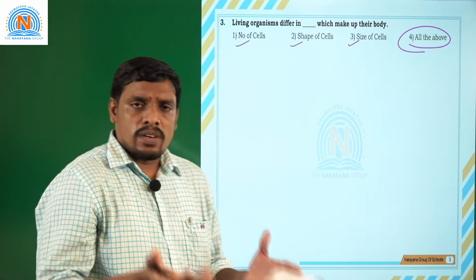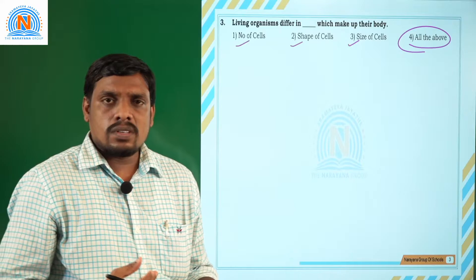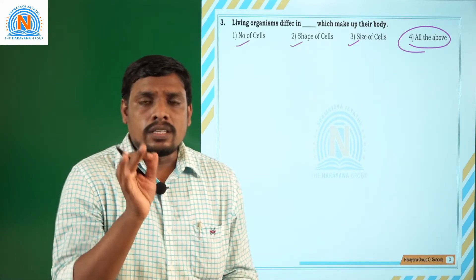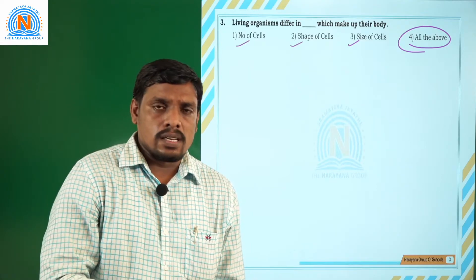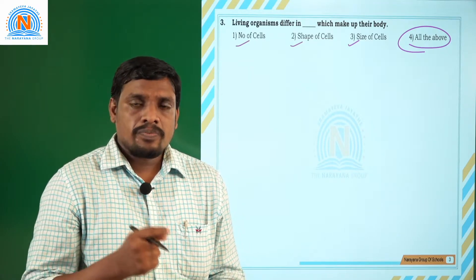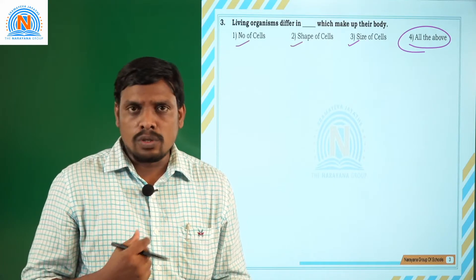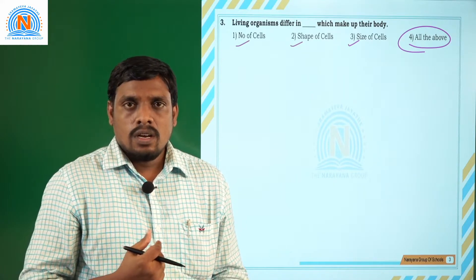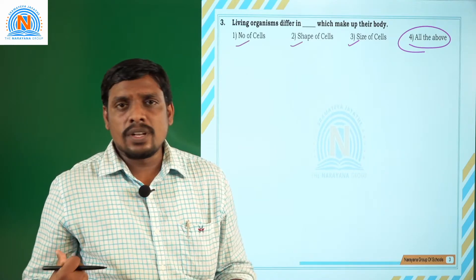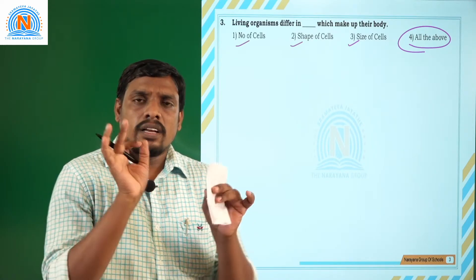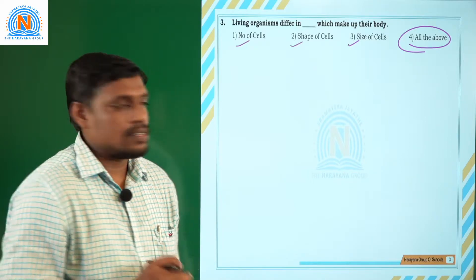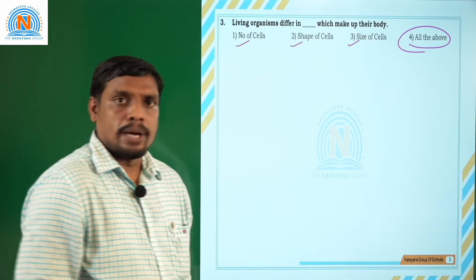We have a number of cells in our body, and each and every cell is different. Blood cells are different from brain cells or nerve cells. Muscle cells are different from bone cells. Liver cells are different from nephrons. Each cell has a particular shape and a particular size. So the correct answer is all of the above.